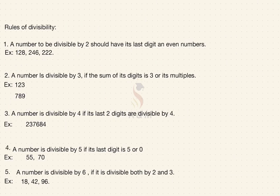Next you must know the rules of divisibility. First rule: a number is divisible by 2 when its last digit is an even number. Example: 128 — the last digit is 8, which is even, so it is divisible by 2. Example: 246 — the last digit is 6, divisible by 2. Second rule: a number is divisible by 3 if the sum of its digits is 3 or a multiple of 3. For 123: 1+2+3 = 6, which is divisible by 3. For 789: 7+8+9 = 24, which is divisible by 3, so 789 is divisible by 3.